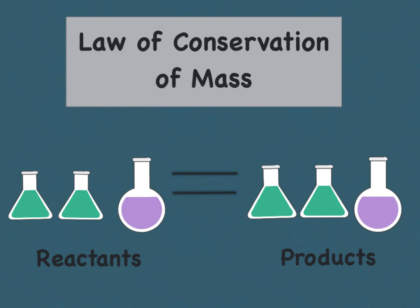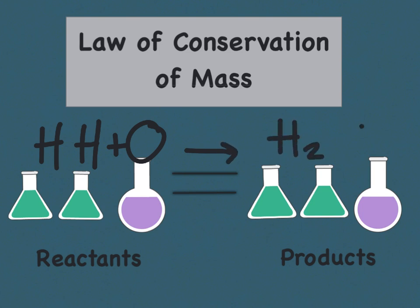The reactants in this case are 2 hydrogen atoms and 1 oxygen atom. That is going to produce, or yield, 2 H's and an O. If the amount of reactants and products is equal to one another, that means we did follow the law of conservation of mass and we have a balanced chemical equation.